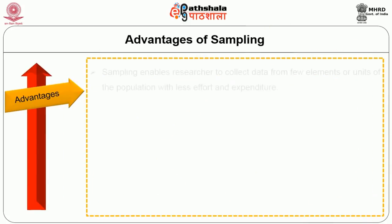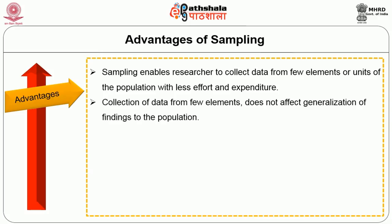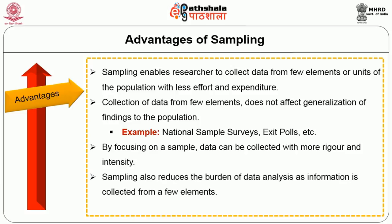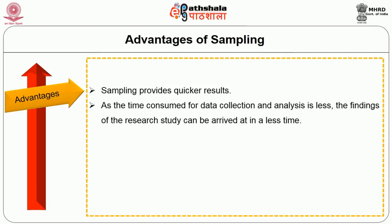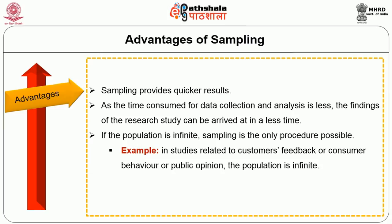Advantages of sampling: Sampling enables a researcher to collect data from few elements or units of the population with less effort and expenditure. Collection of data from few elements does not affect generalization of findings to the population — for example, the National Sample Survey and exit polls. By focusing on a sample, data can be collected with more rigor and intensity. Sampling reduces the burden of data analysis and provides quicker results. If the population is infinite, sampling is the only procedure possible — for example, in studies on customer feedback, consumer behavior, or public opinion.